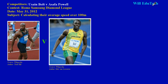Welcome back my friends here on Will EduTech. Today is a very good day being a Jamaican. We had two of our top athletes, two fellow countrymen, participating in the Rome Samsung Diamond League on May 31st, 2012. In this video, we are going to be calculating Usain Bolt's and Asafa Powell's average speed over the 100-meter dash they participated in today. Both won the race — Bolt ran approximately 9.76 seconds and Asafa Powell ran 9.91 seconds, and that was done in a negative 0.1 meters per second headwind.